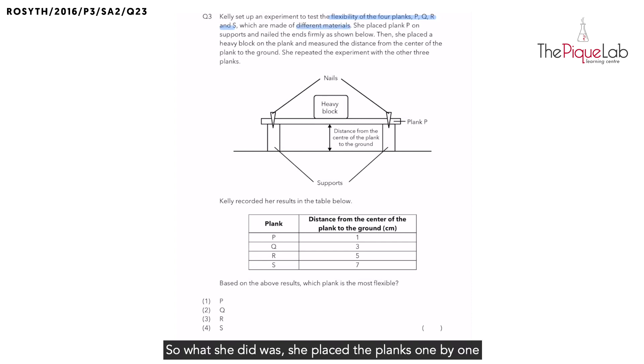What she did was she placed the planks one by one on two supports, nailed the ends down and then placed a heavy block on top of each plank. So what will happen to the plank when the heavy block was placed on it? Yes, the plank will bend.